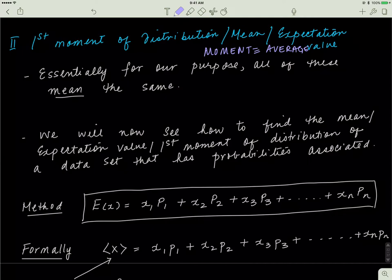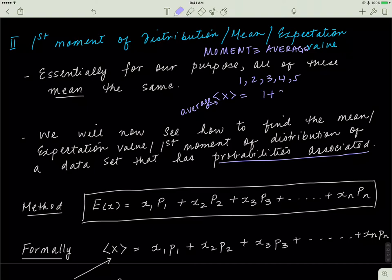The more important thing is how do we calculate the mean, or the expectation value, or the first moment of distribution of a data set that has probabilities associated with it. Many of you already know how to calculate means. If you're given a data set like 1, 2, 3, 4, and 5, you can find the average of x by adding up all of the numbers and then dividing by the total number of data points.